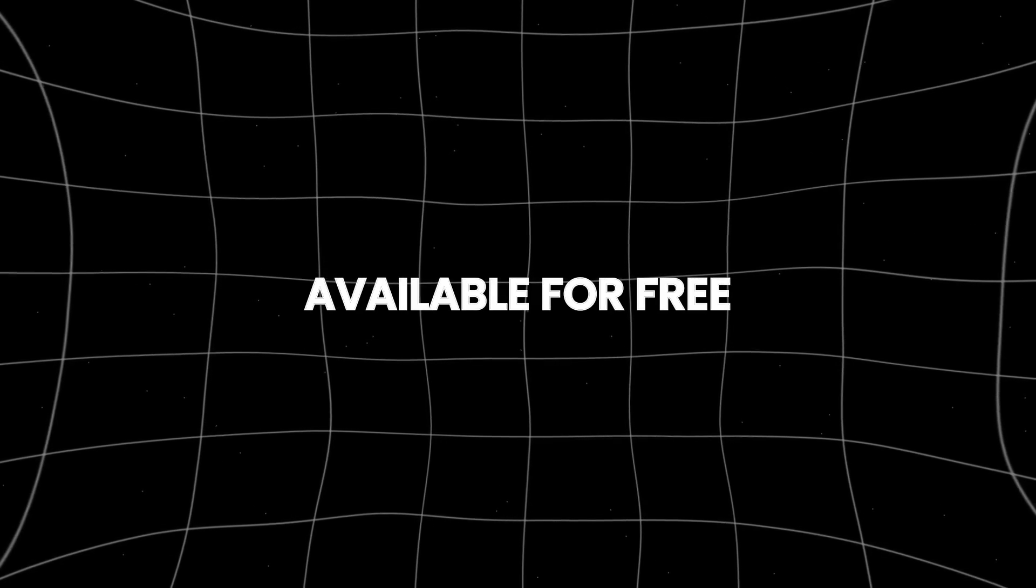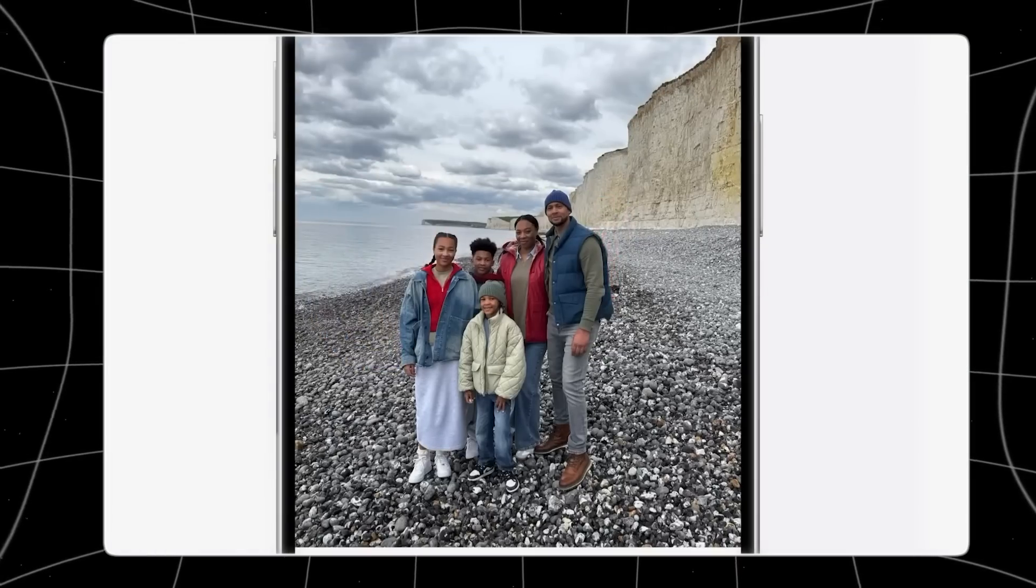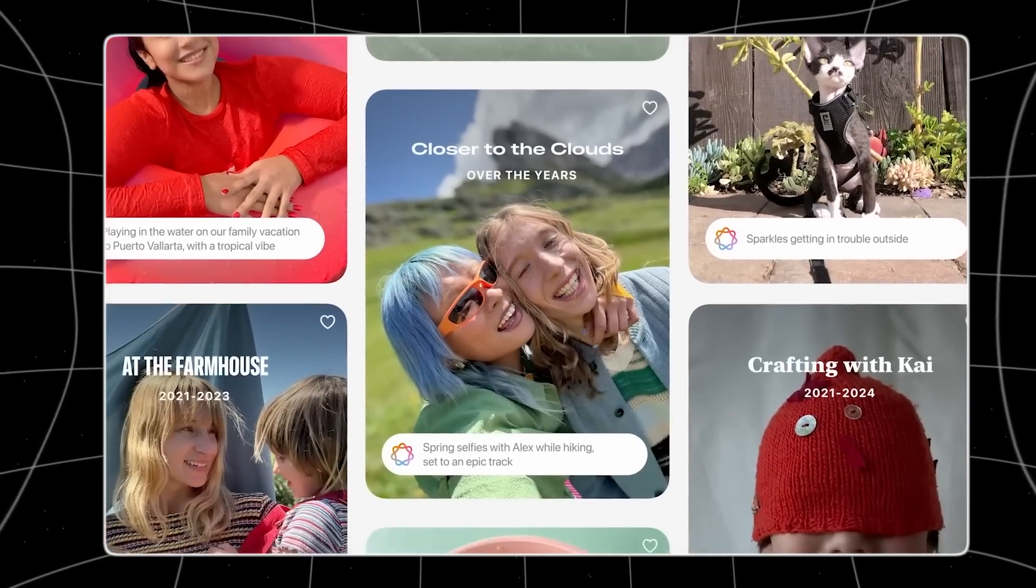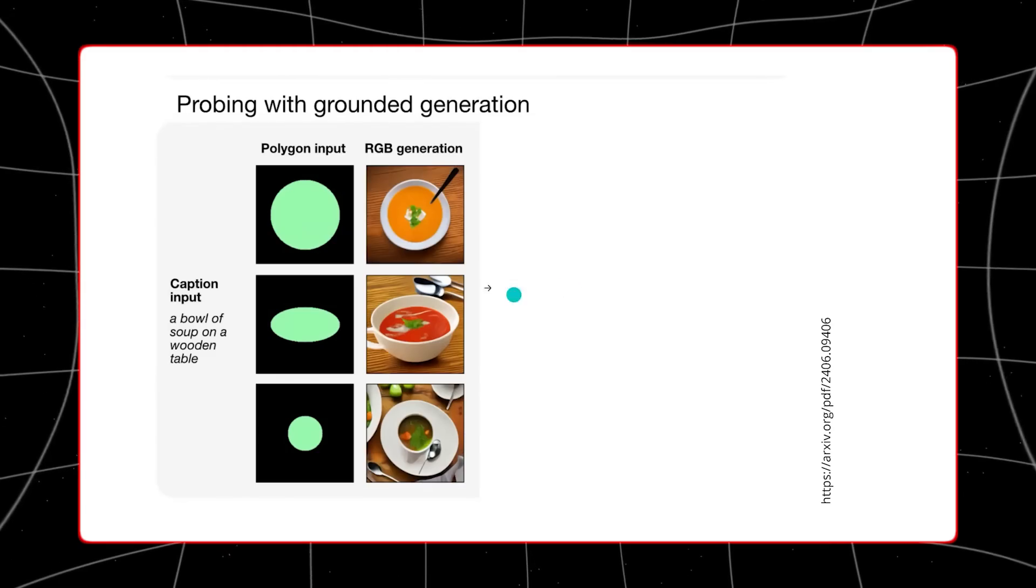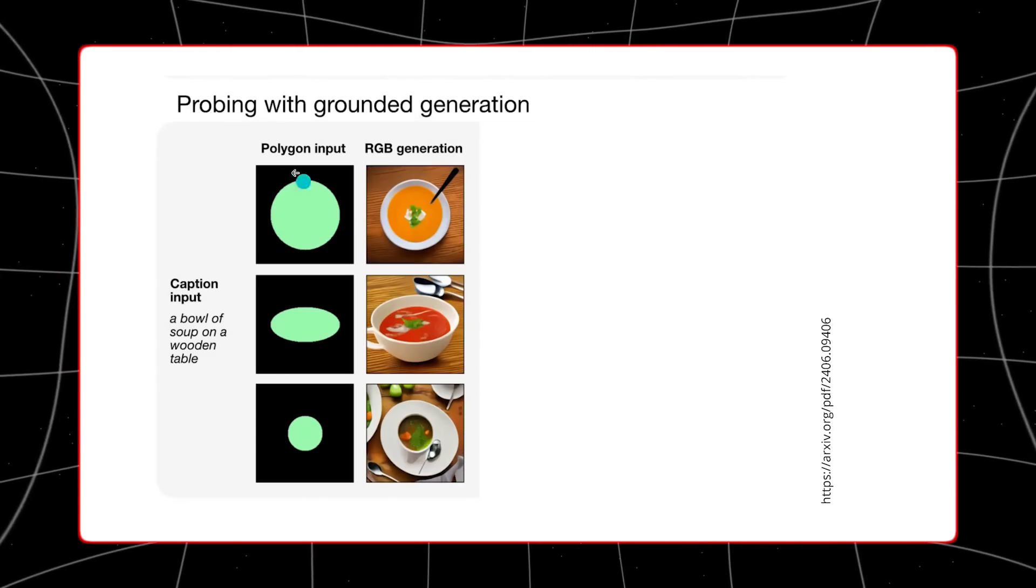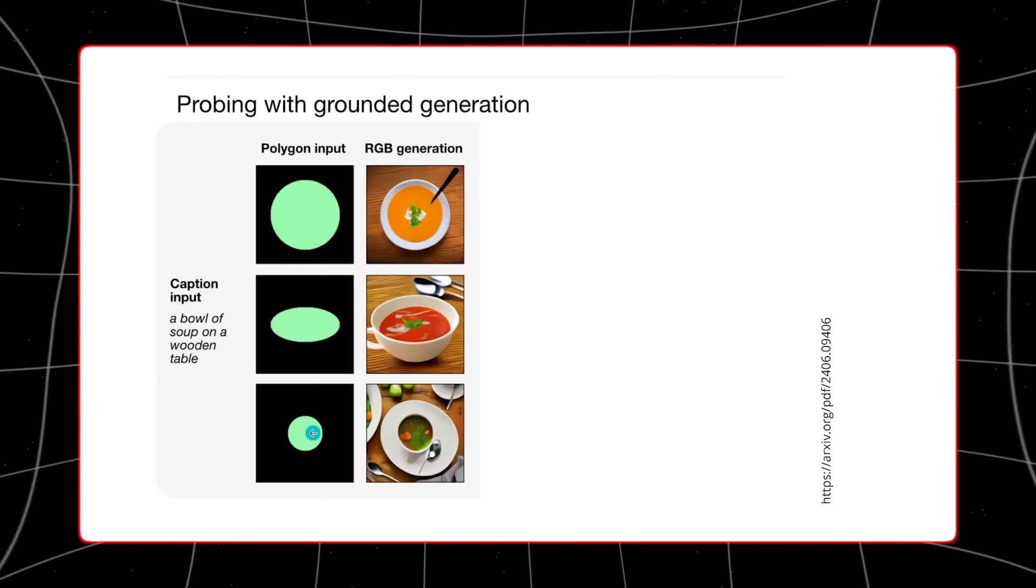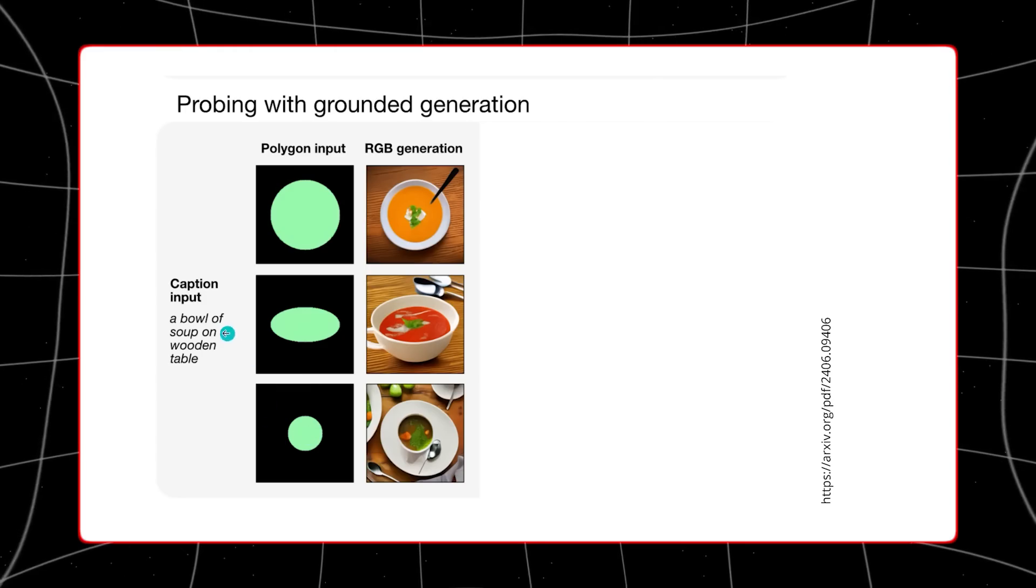This comes seven months after the model was first made available for free, which was a big step in making advanced AI technology available to more people. The public demo is meant to give users a chance to see what the 4M model can do by letting them try it out and see how well it works for them.